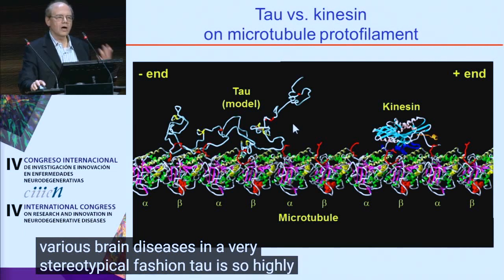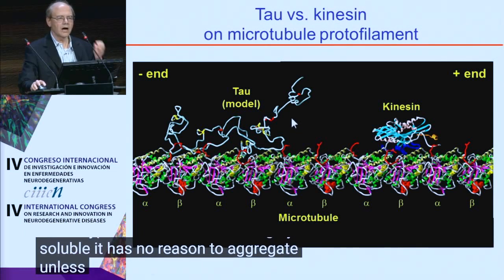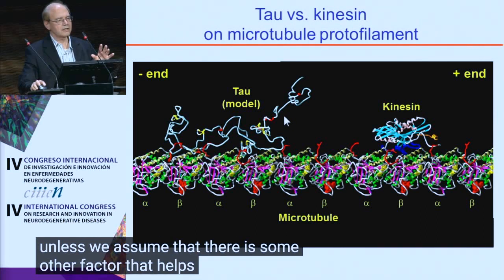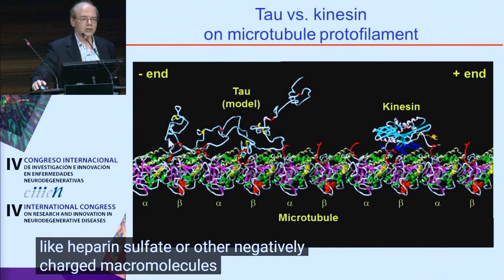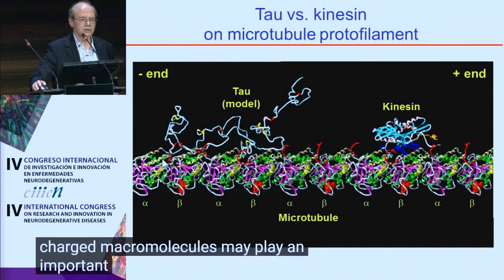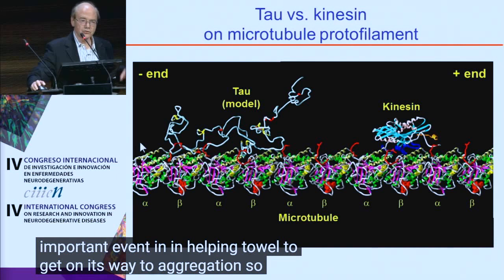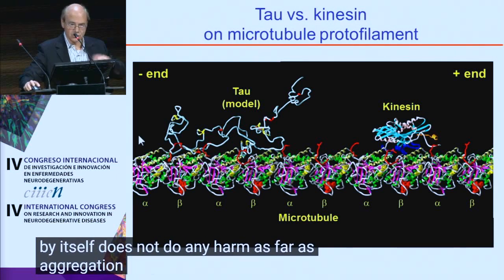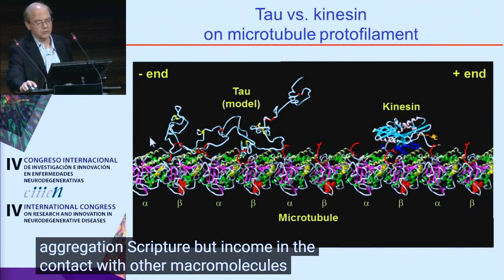Tau is so highly soluble, it has no reason to aggregate, unless we assume that there is some other factor that helps the aggregation. Macromolecules may play an important role in helping tau to get on its way to aggregation. So tau by itself does not do any harm as far as aggregation is concerned, but in contact with other macromolecules, it may do so.